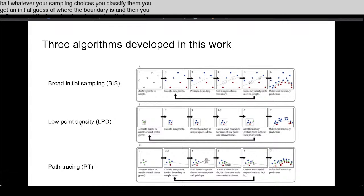The second is a Low Density Point sampling where initially you start and keep adding points around the boundary wherever you have low density and you keep going until you find the boundary.